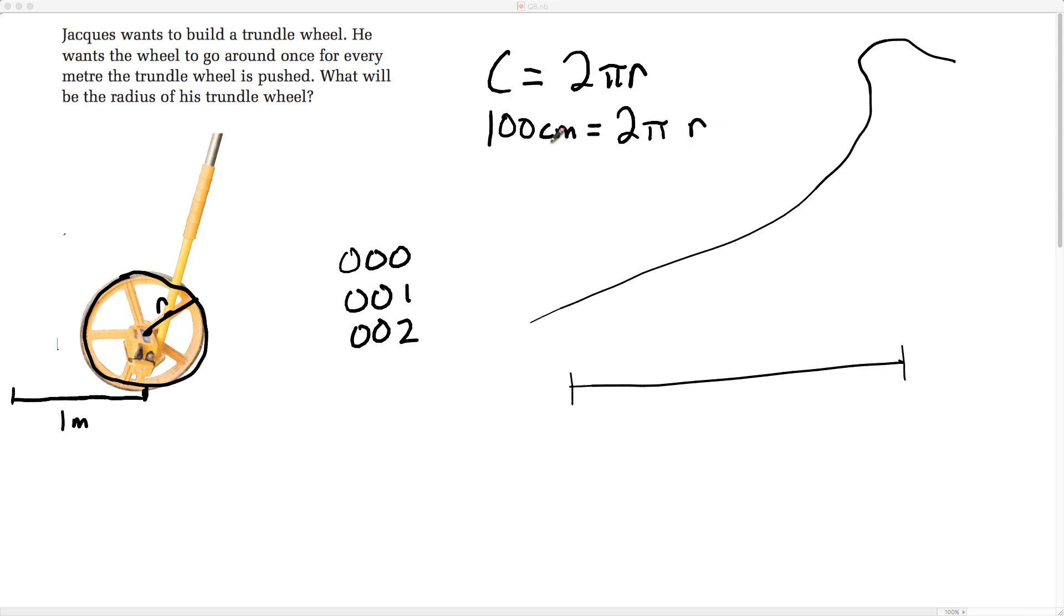Note the 2 has no units, π has no units, so the answer is going to be in centimeters. I don't want 2 times π times r, I just want r. I'm multiplying by 2, multiplying by π, I have to divide by 2 and divide by π.